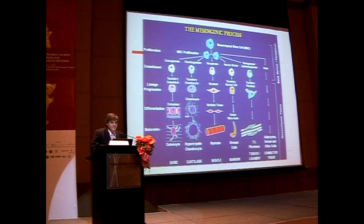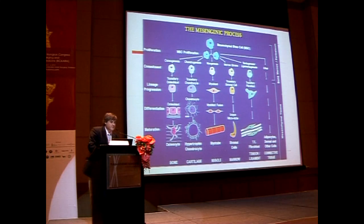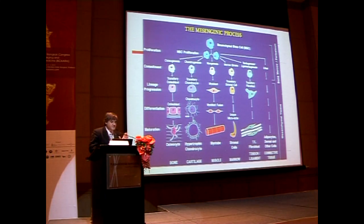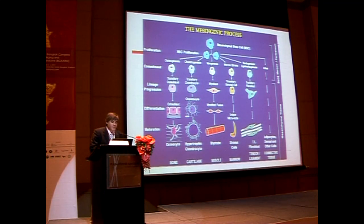If we look at the mesenogenic process, mesenchyme stem cells lead to osteogenesis, chondrogenesis, myogenesis, marrow stroma, tendon, ligaments and others. So that's the type of tissue we can turn these cells into in culture, and that's their role within the physiology.